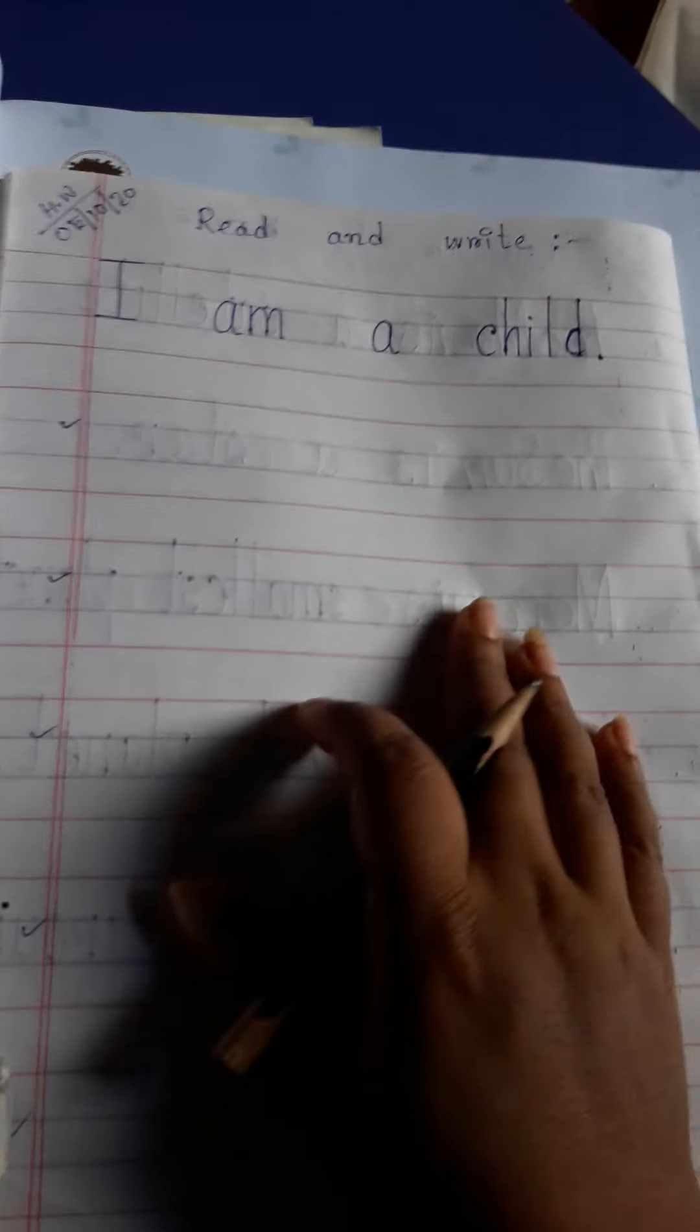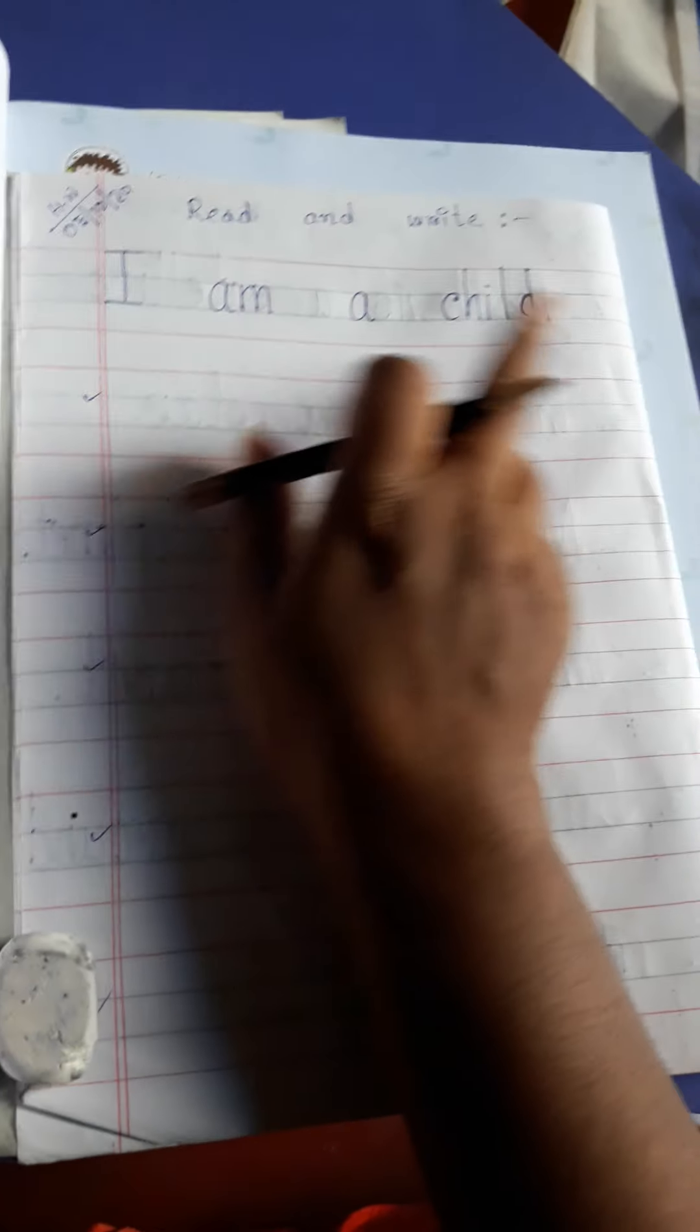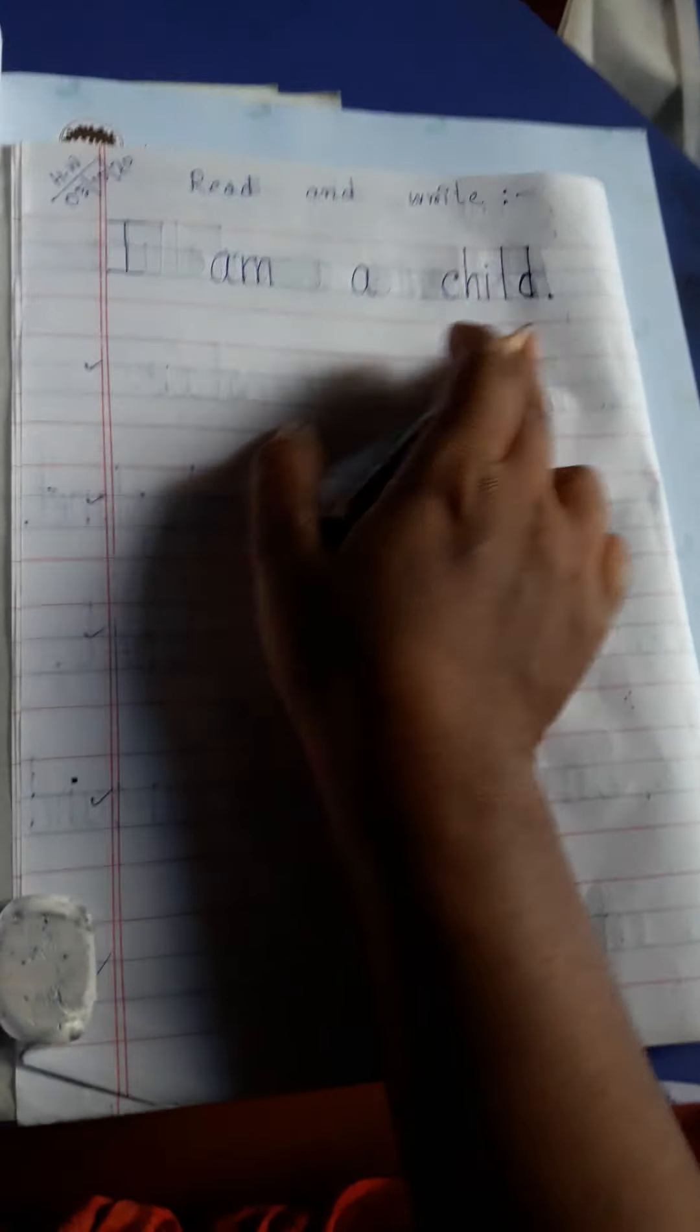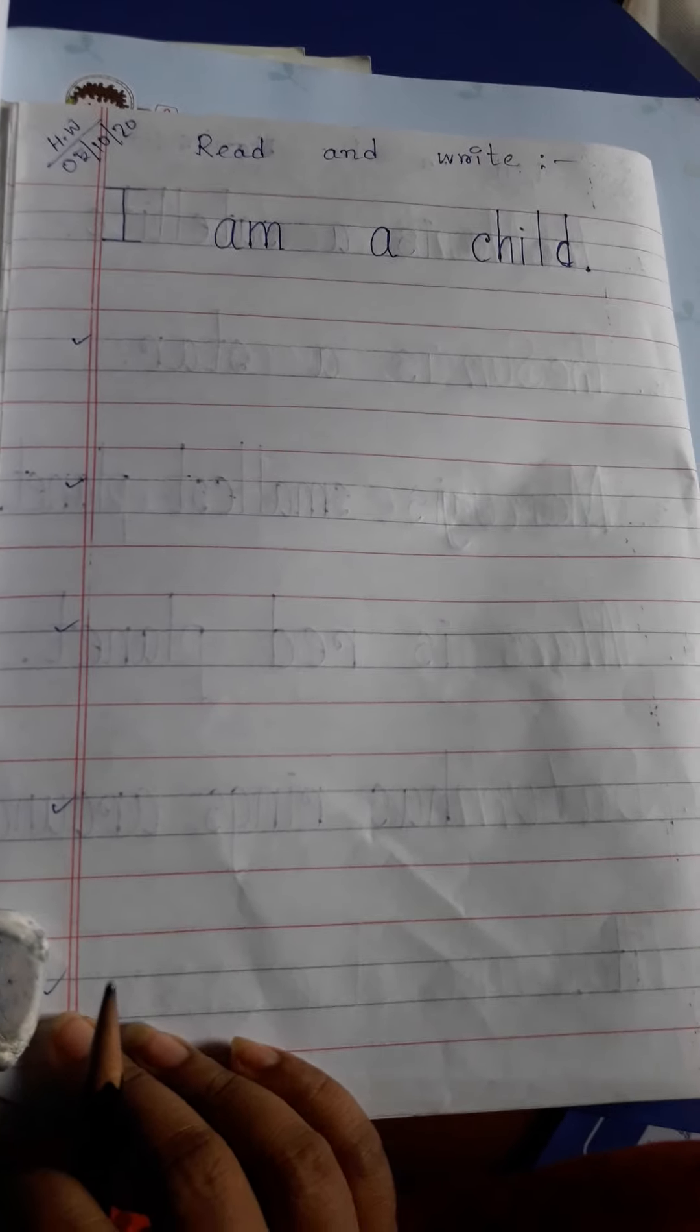Look, it is your language copywork. Read and write. I am a child. You have to read like this and you have to write 1, 2, 3, 4, 5. Five times. I am a child.